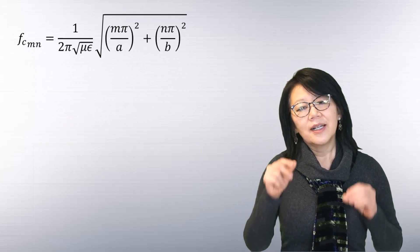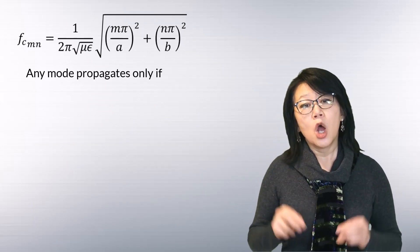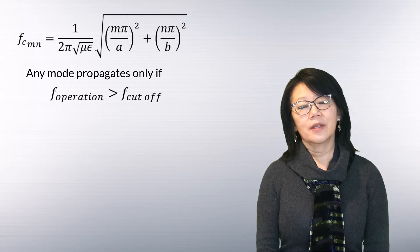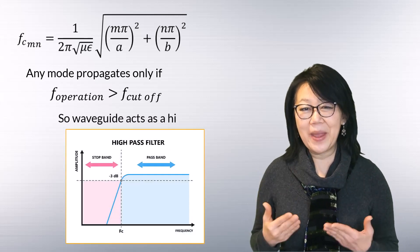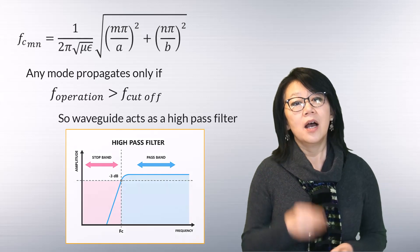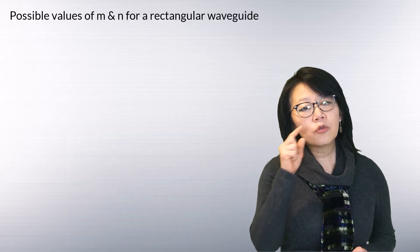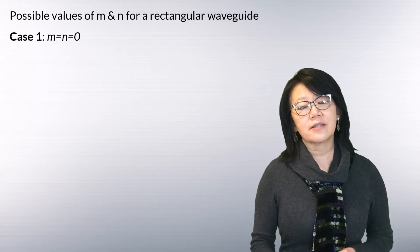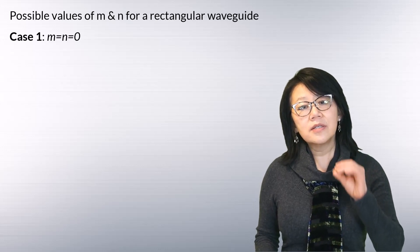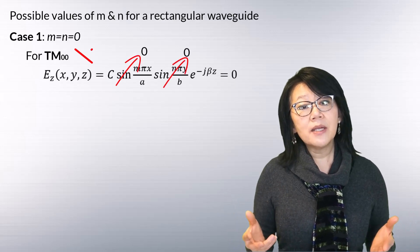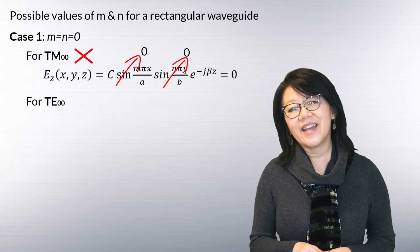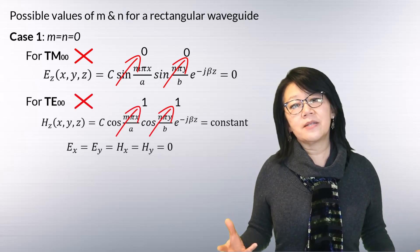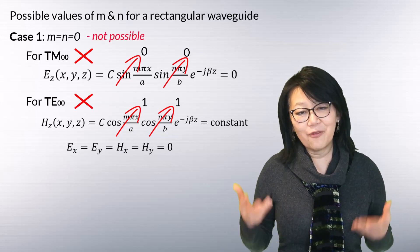From this equation it's evident that mode propagation exists only when the operating frequency is greater than the cutoff frequency — hence waveguides act as a high-pass filter above some frequency. For the first case where m and n are both equal to zero: for the TM case Ez equals zero, meaning there's no wave propagating; and for the TE case Hz remains constant in the x-y plane, so the transverse fields are zero. Hence m and n cannot both be zero simultaneously for a rectangular waveguide.